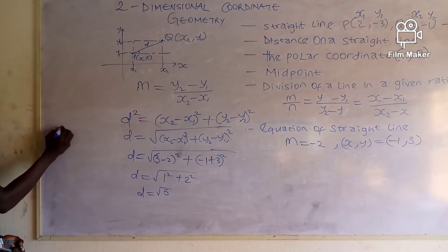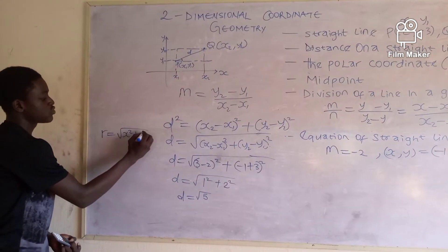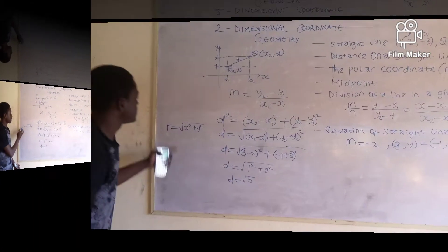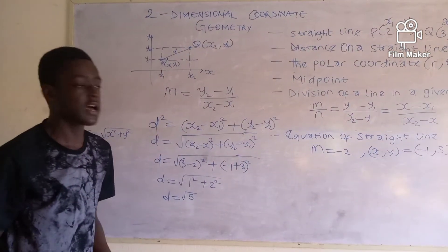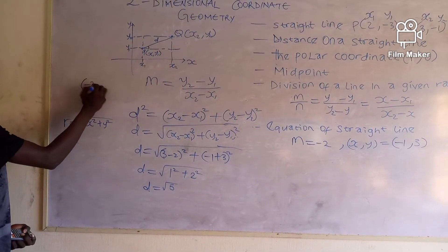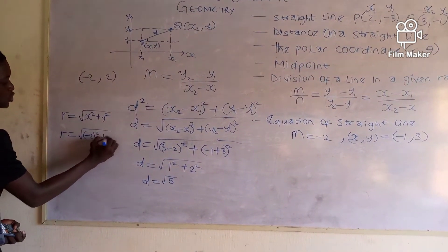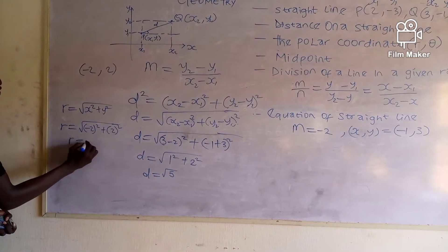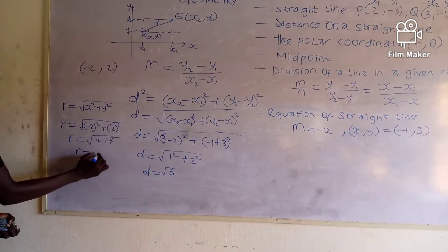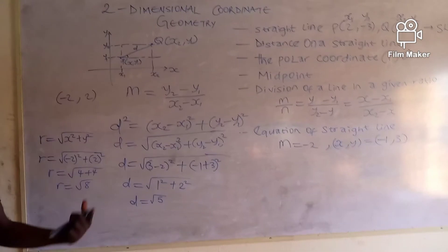From our vectors work, r = √(x² + y²), which is synonymously the distance. Finding r: if x = -2 and y = 2, then r = √[(-2)² + 2²] = √[4 + 4] = √8. We've now found the distance r on our polar coordinates.